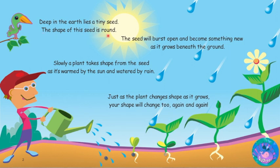is round. The seed will burst open and become something new as it grows beneath the ground. Slowly a plant takes shape from the seed as it's warmed by the sun and watered by the rain.